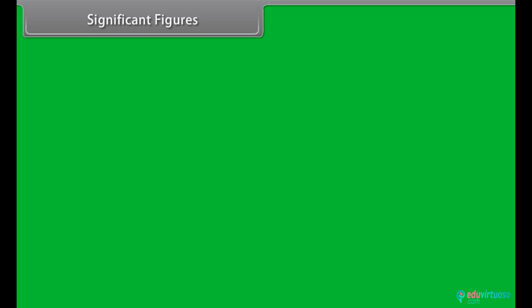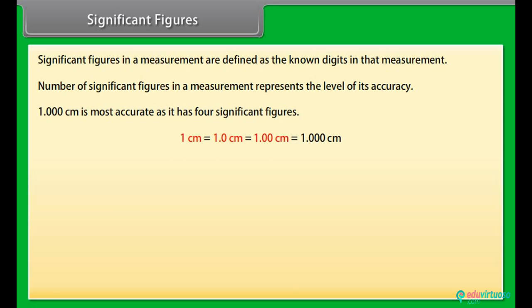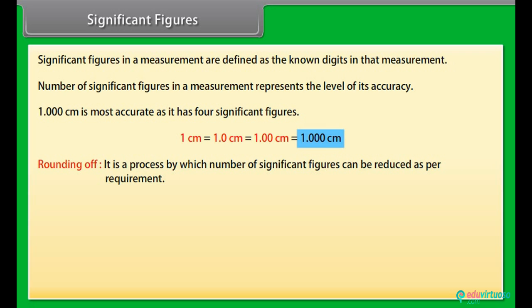Significant figures. Significant figures in a measurement are defined as the known digits in that measurement. Number of significant figures in a measurement represents the level of its accuracy. It means more the number of significant figures in a measurement, more accurate that measurement is. Let us take an example: 1.000 centimeter is most accurate as it has four significant figures. Rounding off is a process by which number of significant figures can be reduced as per requirement. Let us take an example: L = 2.6587 centimeters. On rounding off, L = 2.659 centimeter.